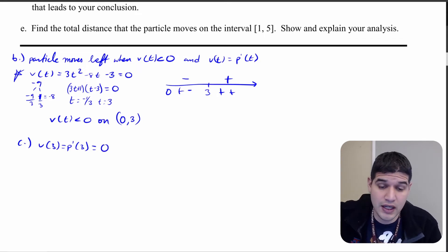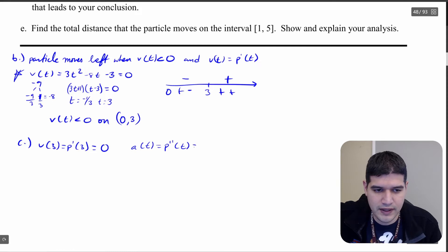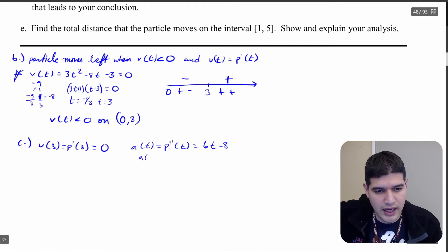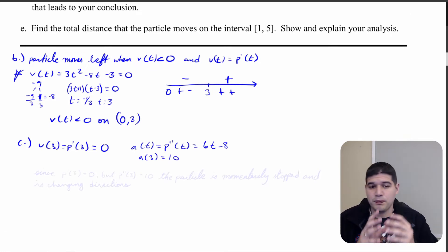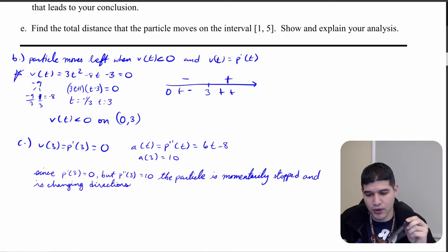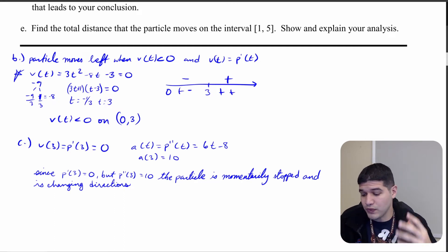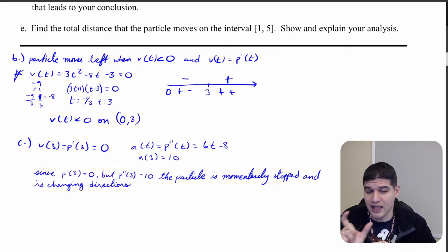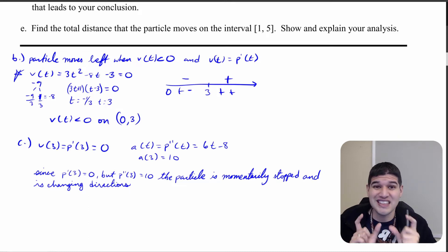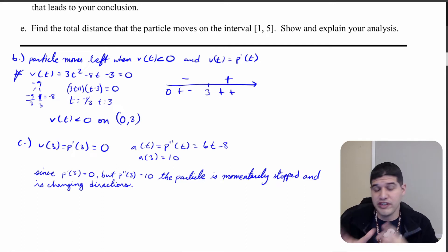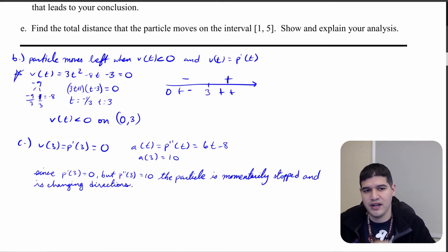Now for the second derivative: acceleration equals p''(t) = 6t - 8. So a(3) = 18 - 8 = 10. Since p'(3) = 0, the particle is momentarily stopped, but a(3) = 10, which is non-zero. This tells us the particle is momentarily stopped but is actually changing directions, because velocity is 0 but acceleration is non-zero.